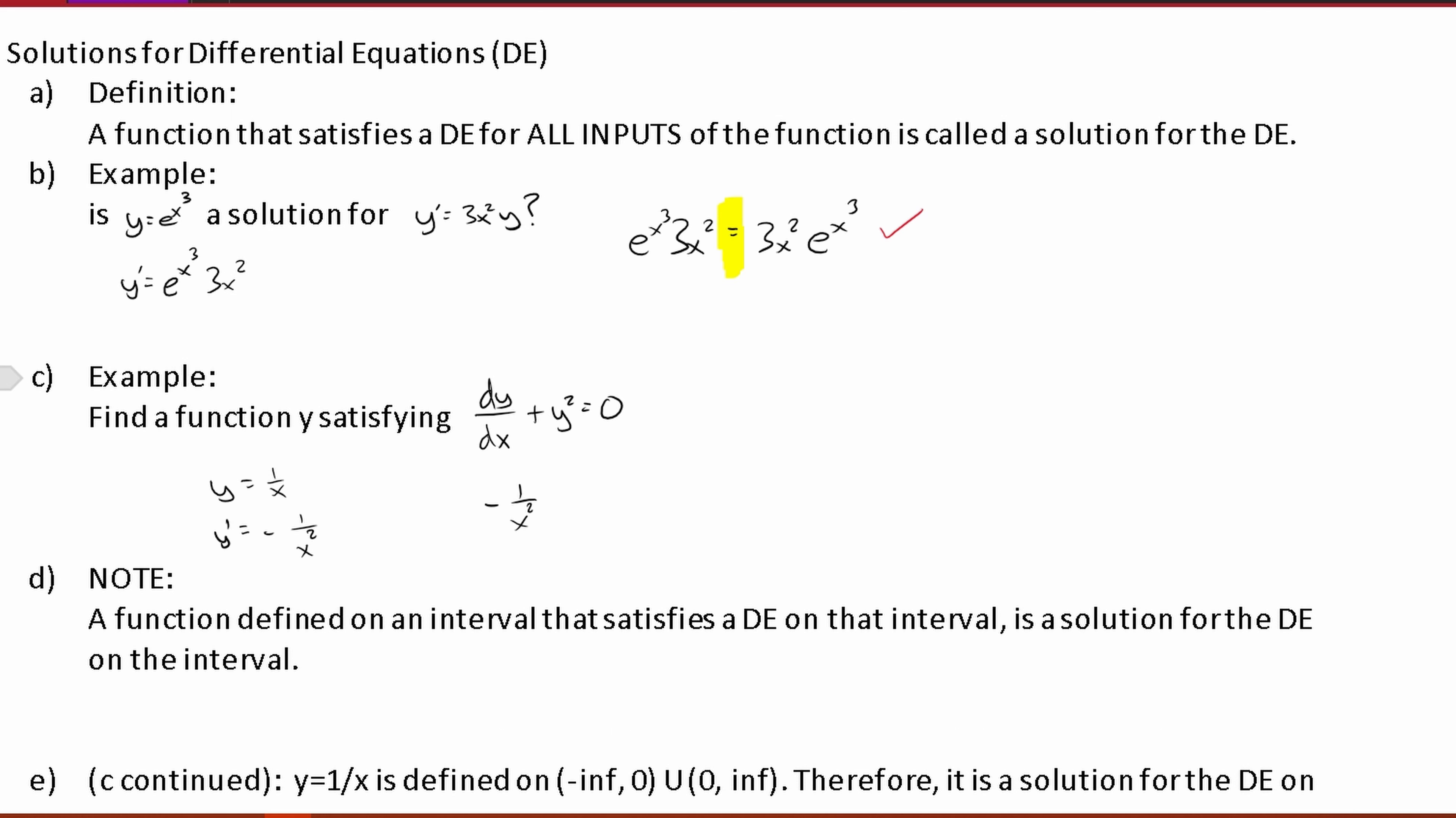Then we'll have our plus y², so this is going to be plus 1 over x² equal to 0. If we move either of these over to the other side, we are going to see that it is equal, and this is a function for DE.